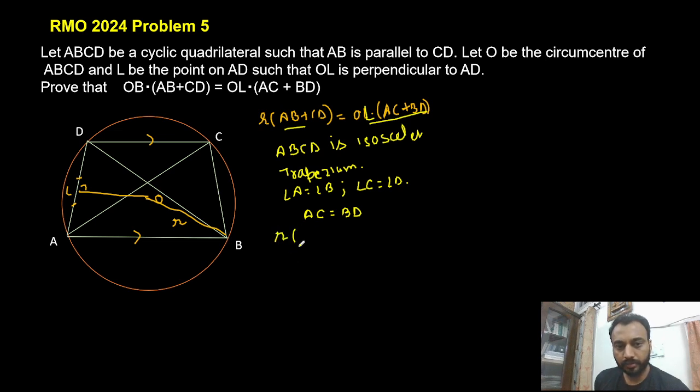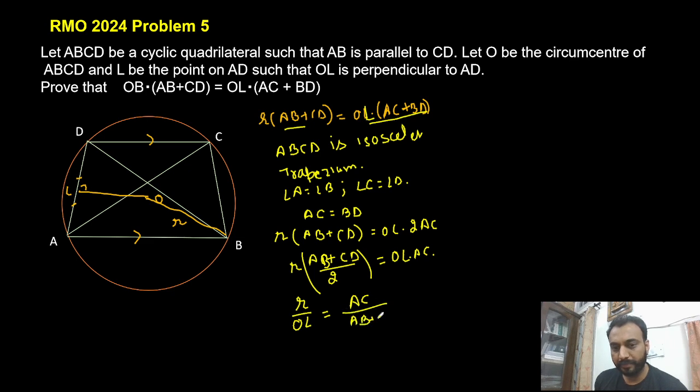So our statement becomes R times (AB + CD) is OL times twice of AC. That can I further say it can be equivalent to (AB + CD)/2 times R is equal to OL times AC. Or I can write it as R/OL is equal to AC/(AB + CD)/2.